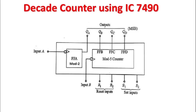The block diagram of IC 7490 looks like this. You will find that there are two different sections — first is the mod 2 section and second is the mod 5 section. It comprises four different flip-flops: flip-flop A, flip-flop B, flip-flop C, and flip-flop D. Flip-flop A can independently act as a mod 2 counter, which counts two different states from 0 to 1.